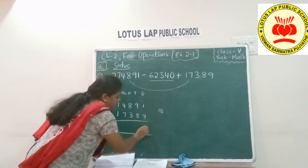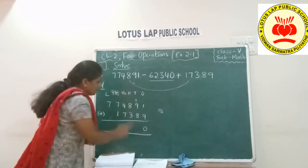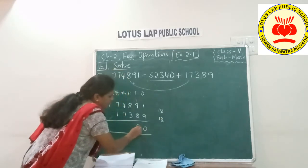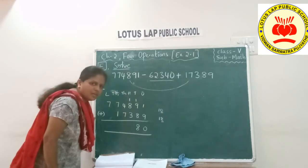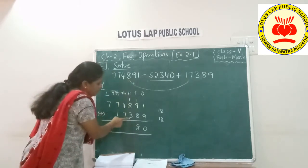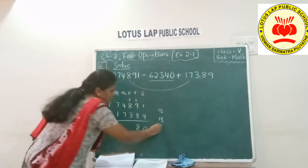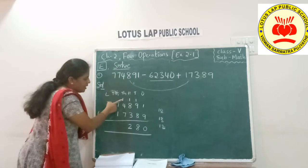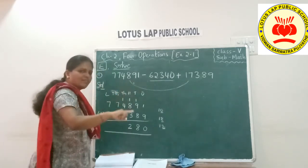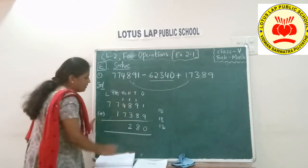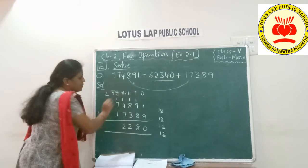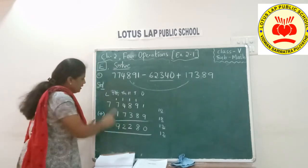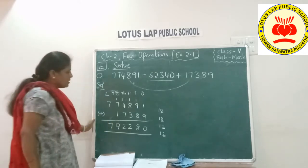Nine plus one is ten, plus eight will give eighteen — write eight here, carry one to hundreds place. Eight plus one is nine, plus three is twelve — write two, carry one to thousands place. Four plus one is five, five plus seven is twelve — write two, carry one to ten thousands place. Seven plus one is eight, eight plus one is nine. Finally, last place only seven is here. So this is our answer for the addition — we added the first and third numbers.